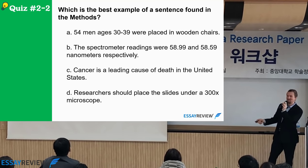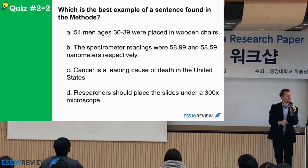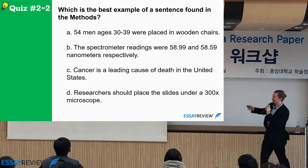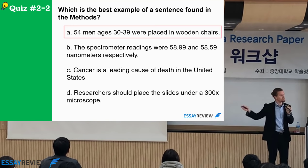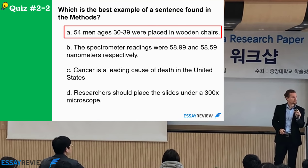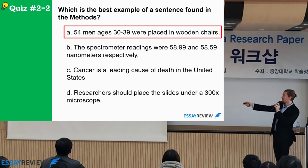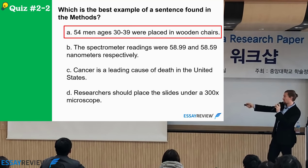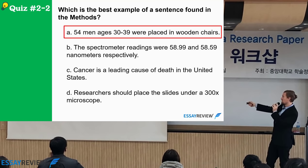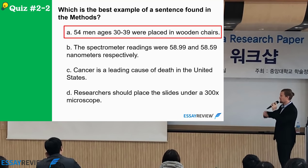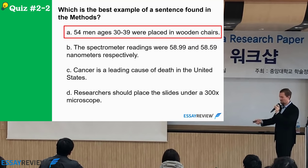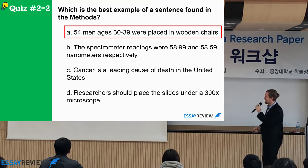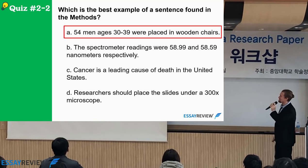Which is the best example of a sentence found in the methods? A, '54 men ages 30 to 39 were placed in wooden chairs'; B, 'the spectrometer readings were 58.99 nanometers respectively'; C, 'cancer is a leading cause of death in the United States'; D, 'researchers should place slides under a 300 times microscope.' The answer is A — it clearly describes the sample (54 men, their age range) and what procedure was undertaken, which is how a good methods sentence reads.